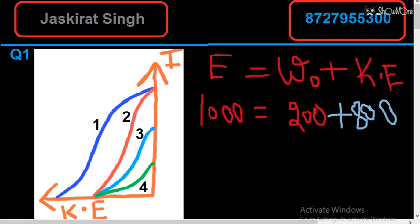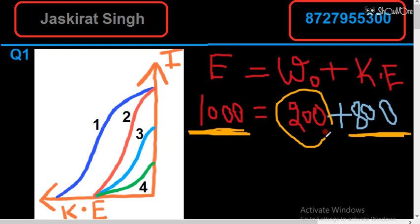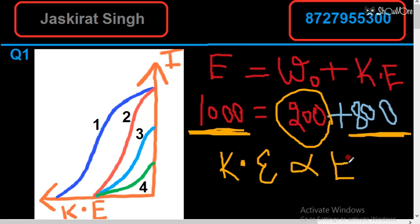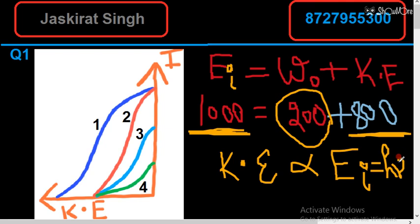More the incident energy, more will be the kinetic energy. Since the work function is constant, if we remove it, kinetic energy is directly proportional to the incident energy. For example, if incident energy is 1600 and work function is 200, kinetic energy is 1400. If incident energy is 2000, kinetic energy will be 1800 joules. So more incident energy means more kinetic energy.